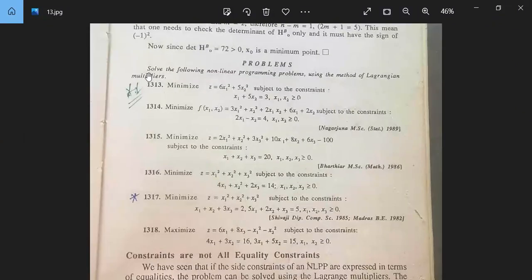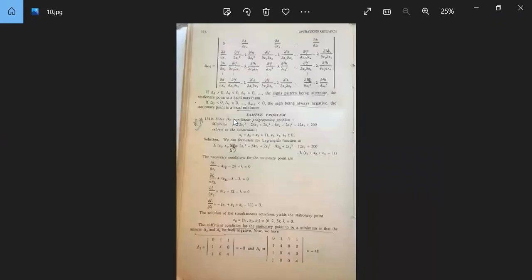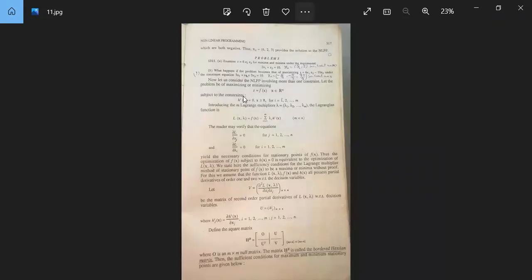After this, there are some exercises for you to practice. Solve the following non-linear programming problems using the method of Lagrangian multipliers. This is non-linear with single constraint, non-linear with single constraint, non-linear with double constraint. Here there are 2 constants. The problem we just studied covers this. Here, understanding how to compute the Hessian matrix requires some effort, but with practice you will get it.